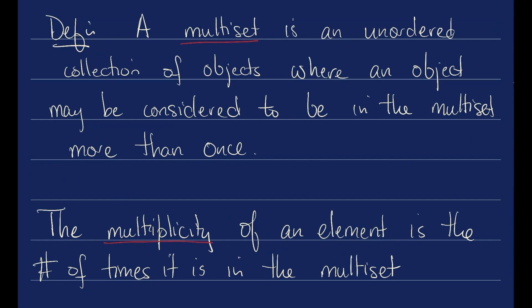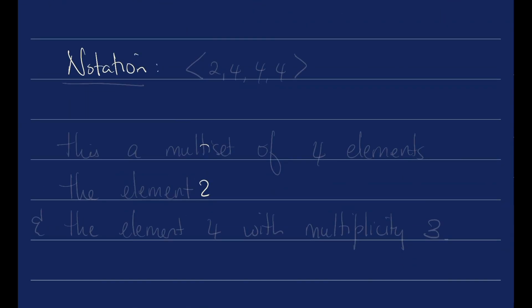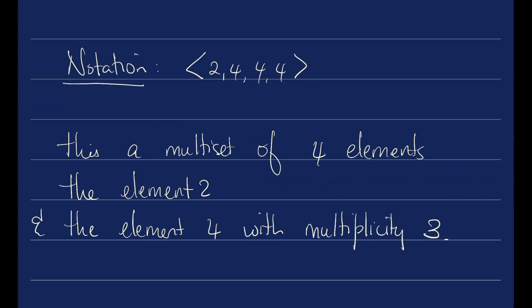For notation, for multi-sets we're going to use these pointy brackets. And in this case this is a multi-set of four elements. The element 2 and the element 4 with multiplicity 3.